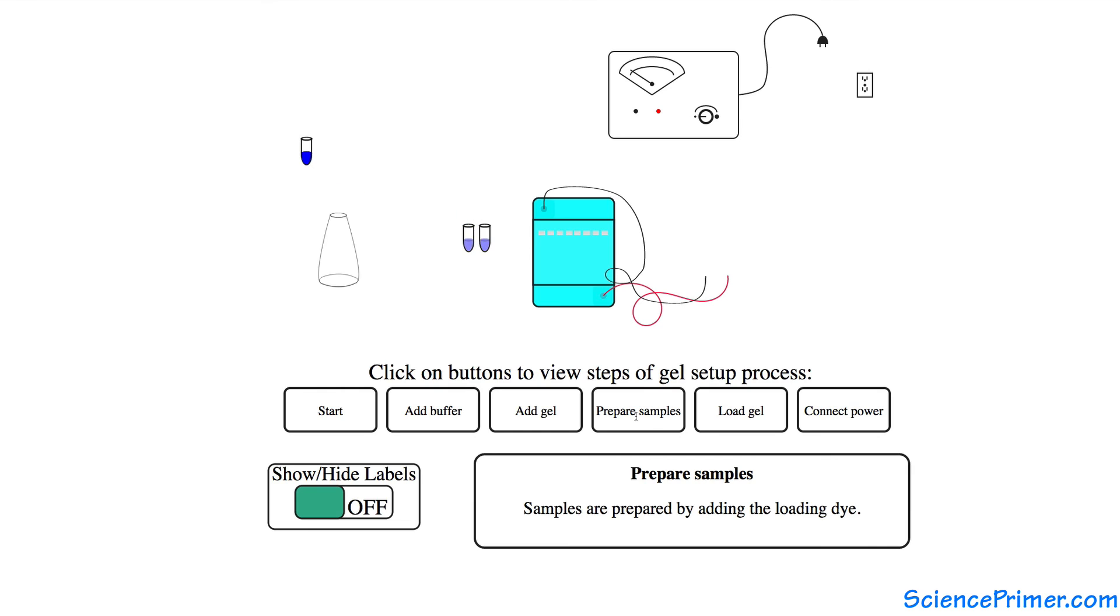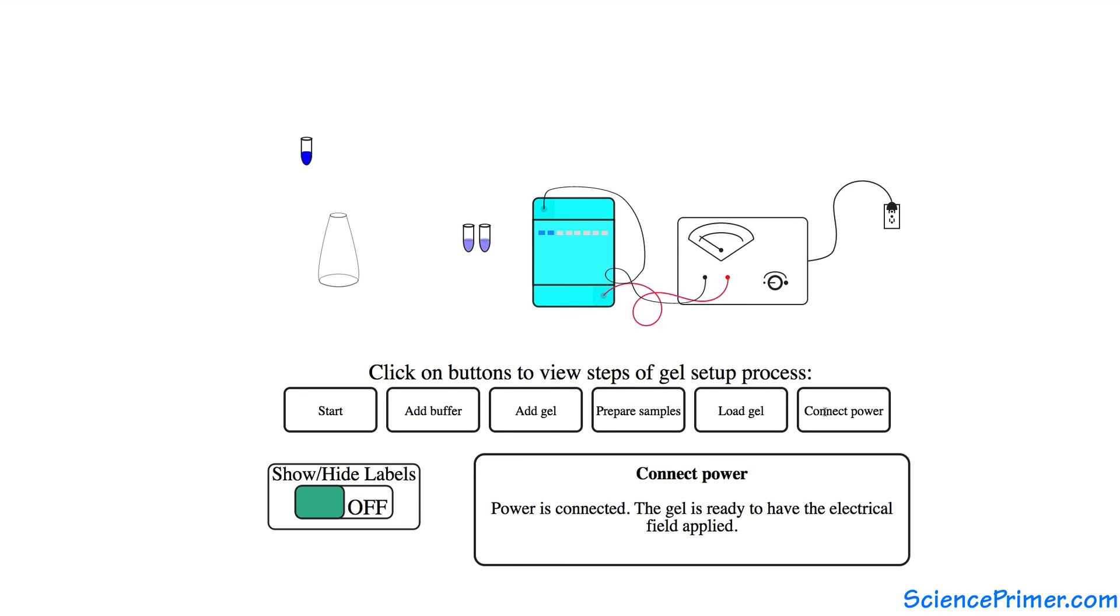Add loading dye to the samples and standards, pipette a small volume of the sample and standards into each well, and connect the power supply electrodes to either end of the gel box. With these steps complete, the gel is ready to run.